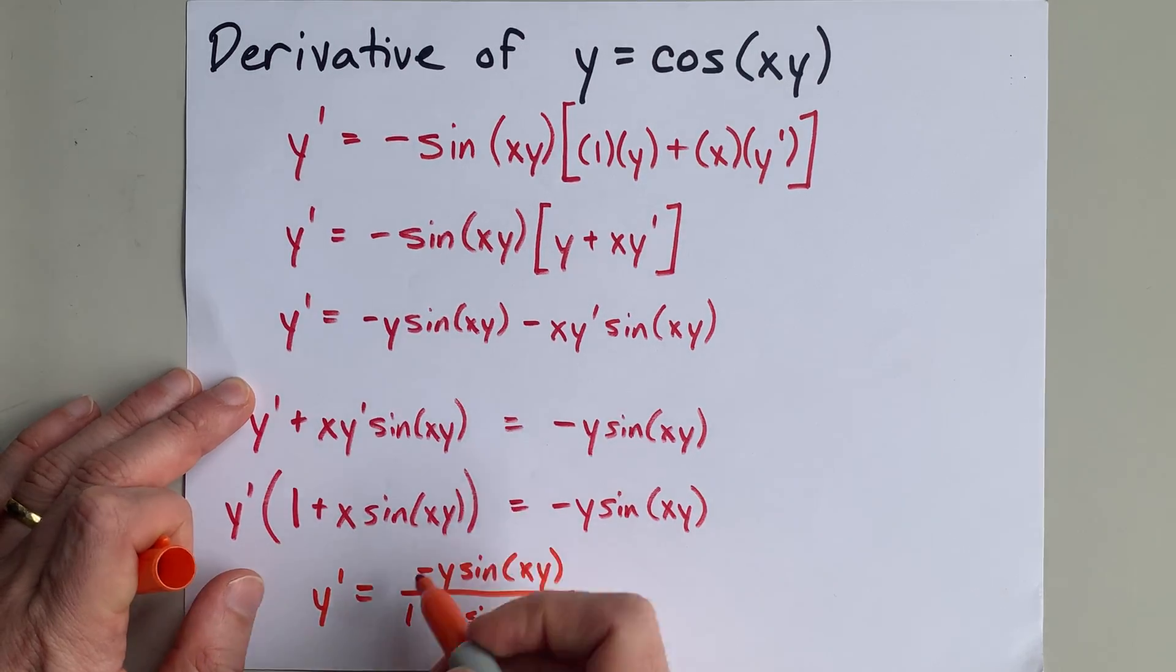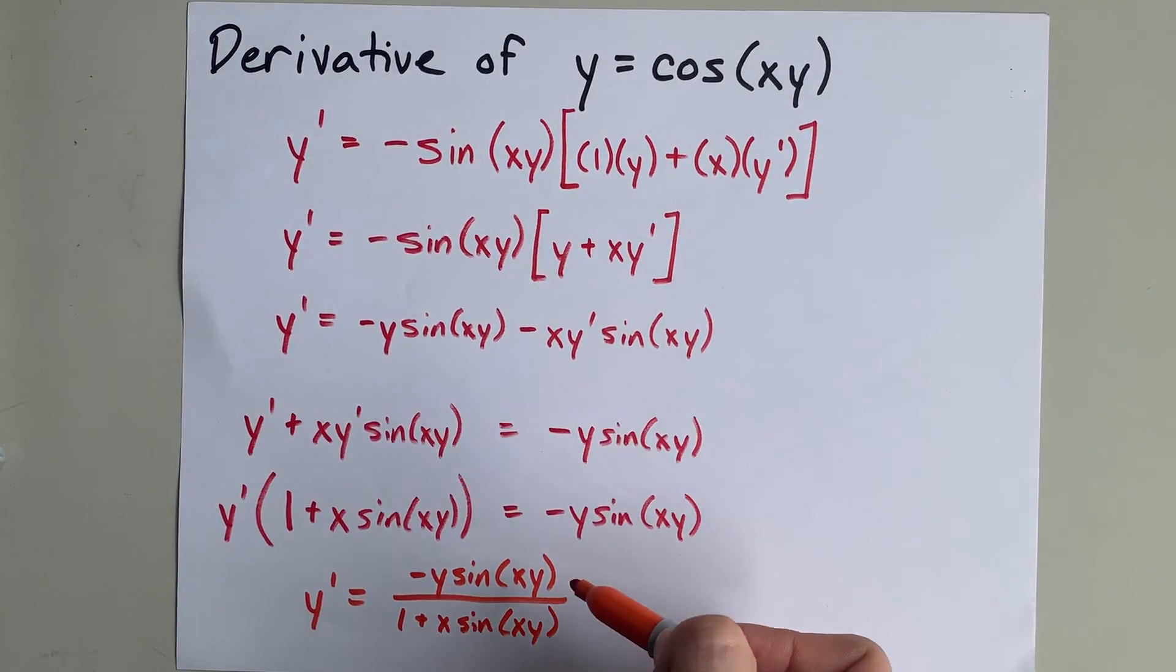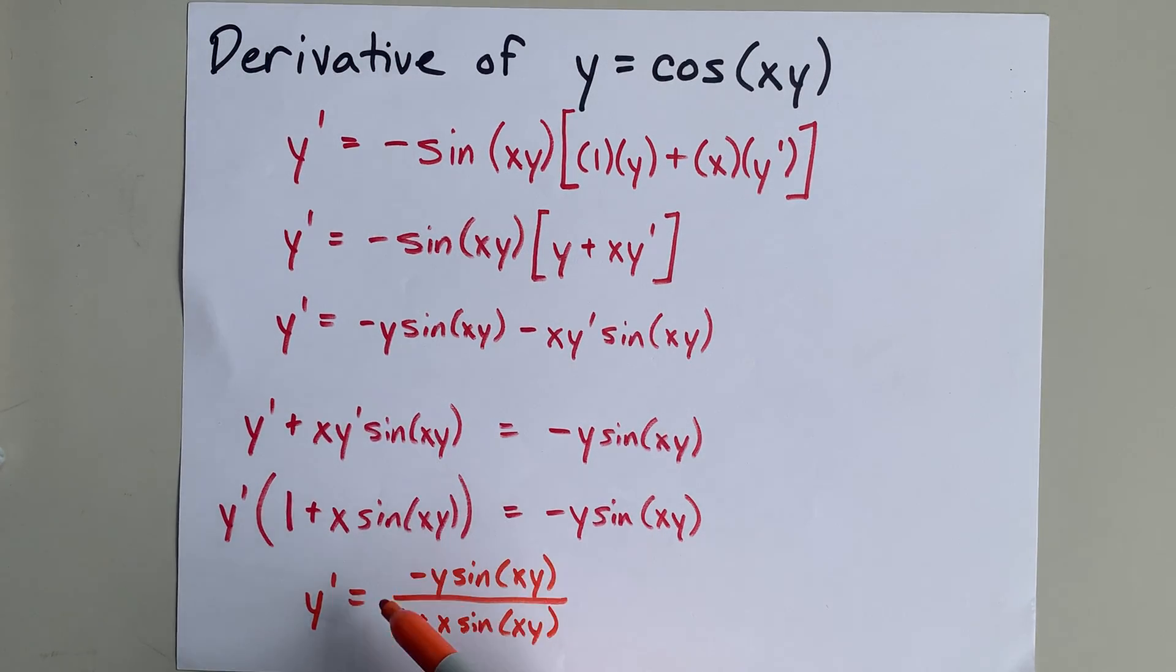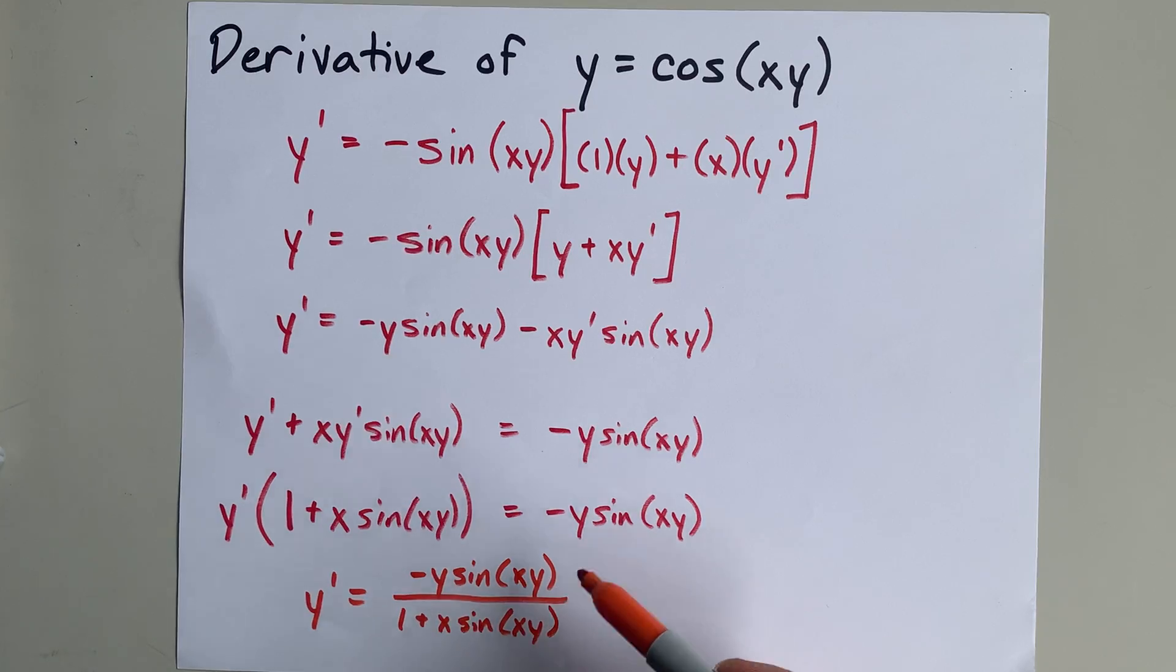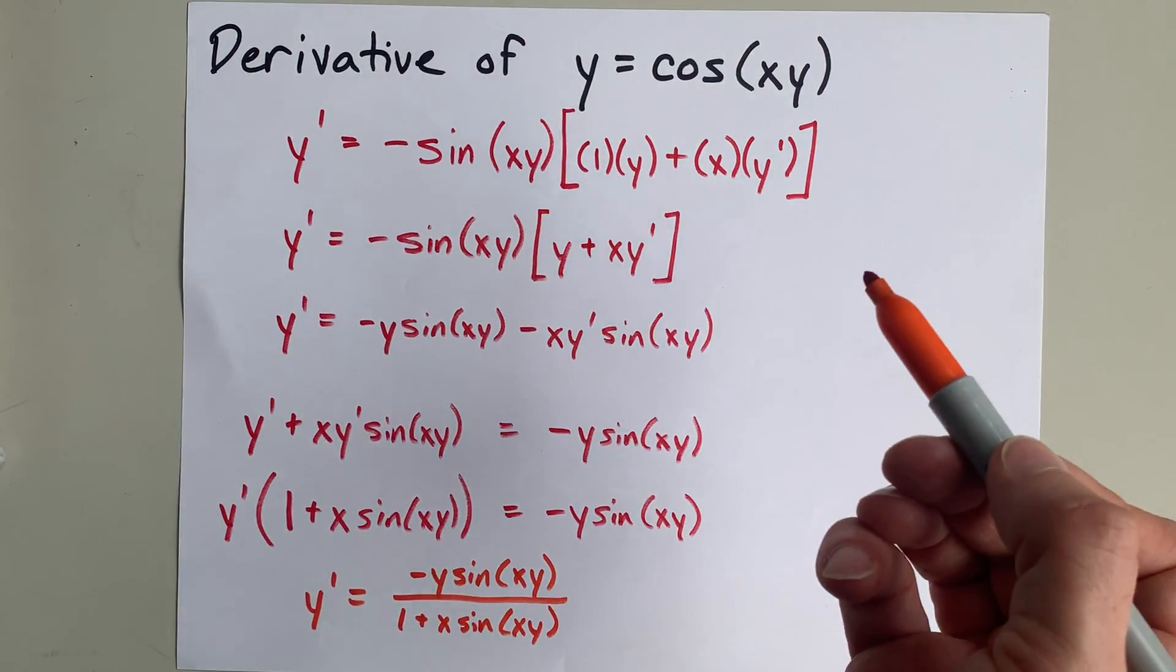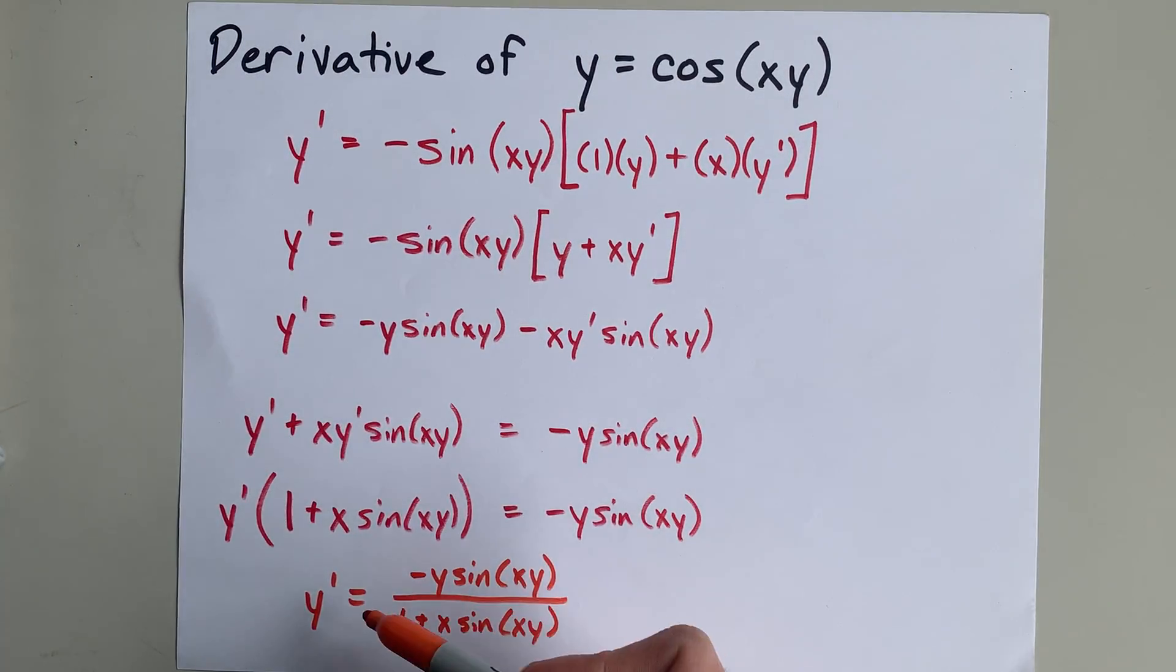That may look more complicated than it did up here because it's now a fraction, but there's no y primes here. So all I need is a point x comma y on the original function, and I'll be able to calculate the slope of the function, a.k.a. the derivative at that point.